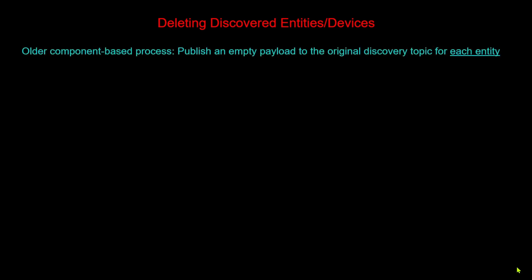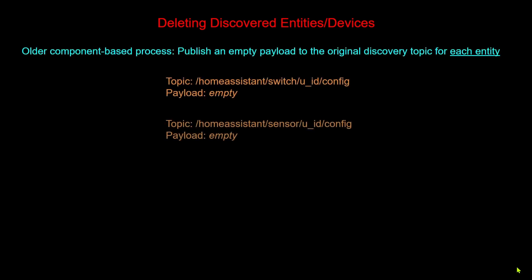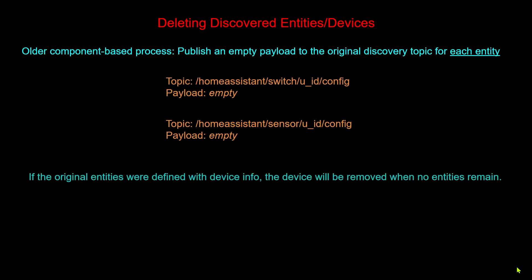The original video also covered how to issue an MQTT message to delete discovered entities. Under the original component-based method, you publish a message on the same topic as the original discovery but with an empty payload. This removes the entity from Home Assistant. If entities are part of a device, the device is then removed once no entities for that device remain.